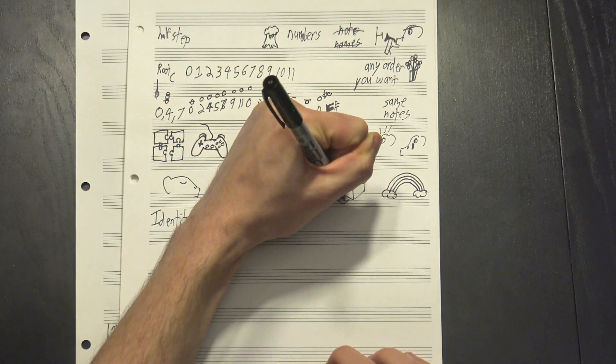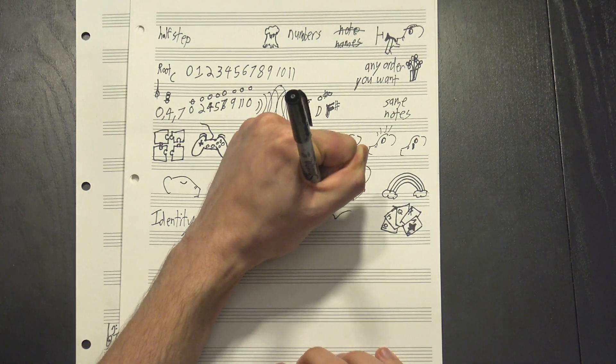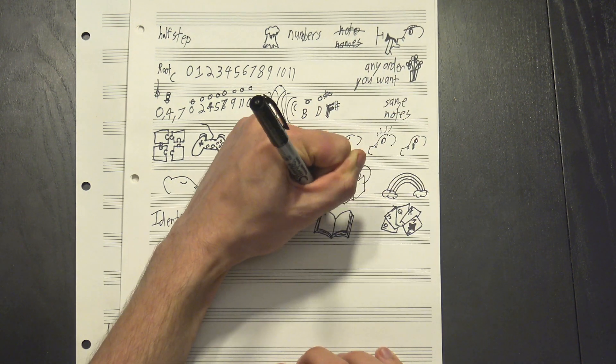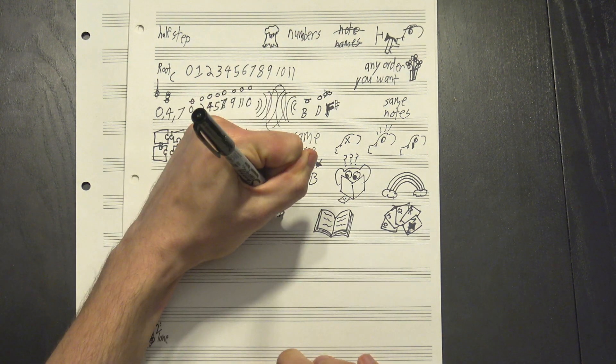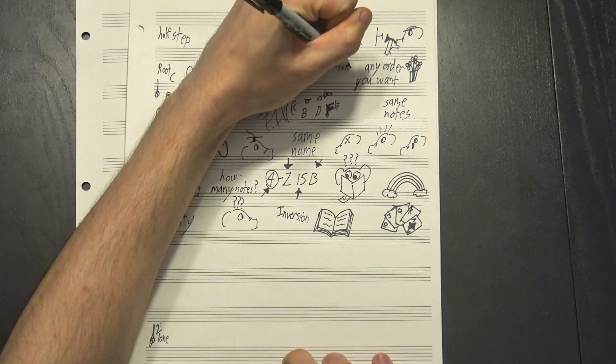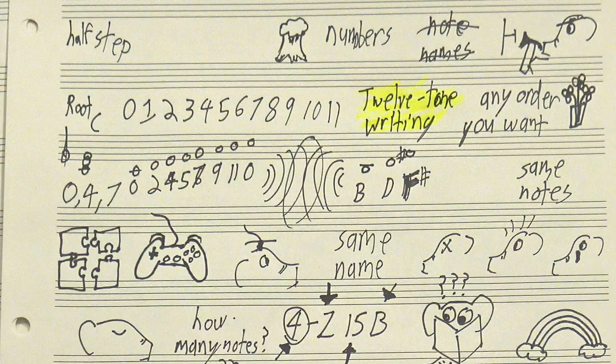The second number is the set's specific identity. Unfortunately, you'll probably just have to look these up. They're in a particular order, but there's no good technique for remembering which number goes to which set, at least not that I'm aware of. And finally, this letter at the end tells you whether or not the set is inverted. What does that mean?